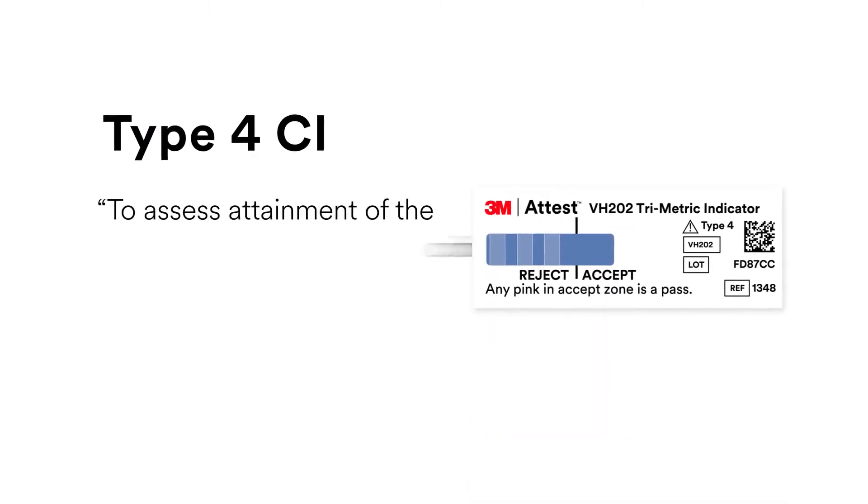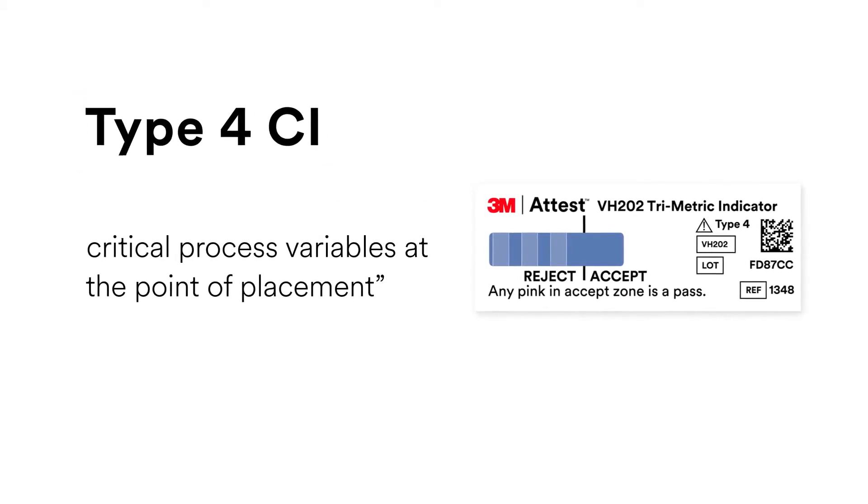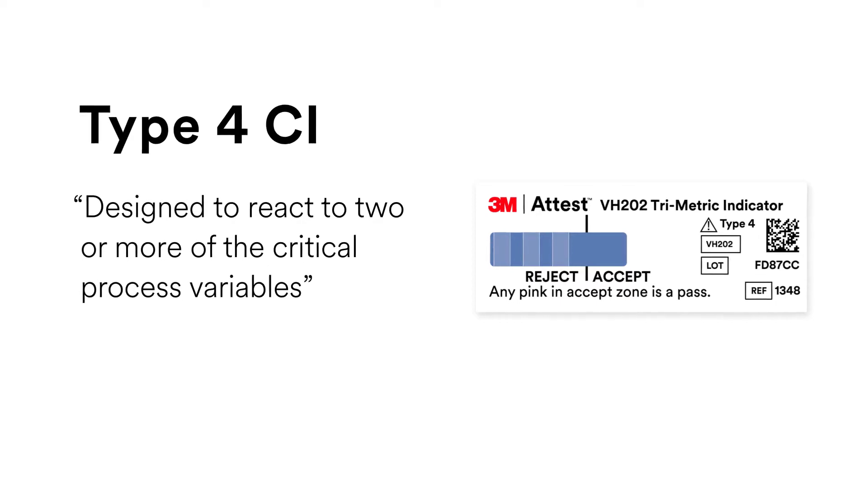The intended use of an ISO 11140-1 Type 4 CI is to assess attainment of the critical process variables at the point of placement. Type 4 is further defined as designed to react to two or more of the critical process variables.